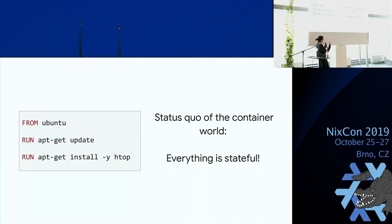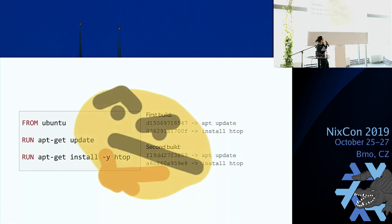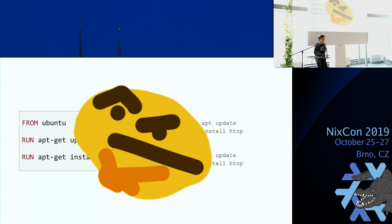I actually took this particular Dockerfile and ran it twice earlier today. Here are the hashes resulting from the two image builds — as you can see, they have nothing to do with each other at all. This was kind of my reaction. And a while back I started thinking about whether or not there might be a better way to do this.